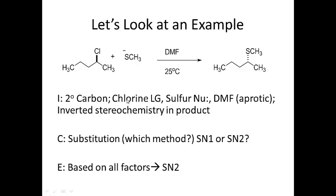We have a good leaving group on a secondary carbon. Considering all these factors — aprotic solvent, secondary substrate, good leaving group, and inversion of stereochemistry in the product — we know it's a substitution because chlorine has been substituted by the nucleophile. Weighing all the factors together, we conclude this reaction went through an SN2 mechanism.